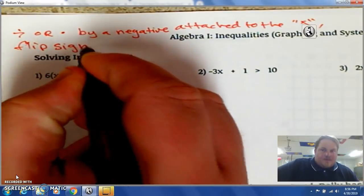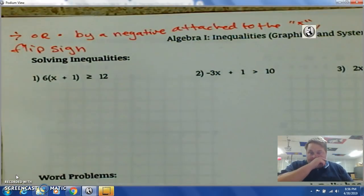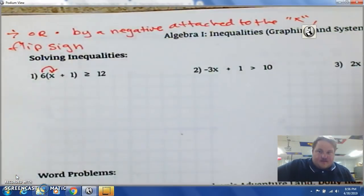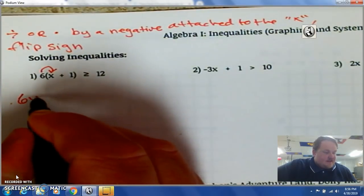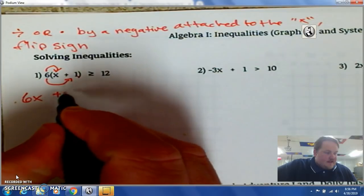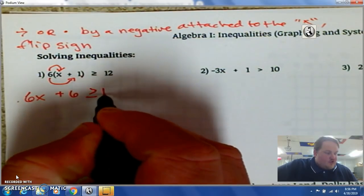It goes in the opposite direction. So, we need to keep that rule in mind as we go through this. So, here this is the distributive property. 6 times x gives me 6x. 6 times positive 1 gives me 6. It's greater than or equal to 12.